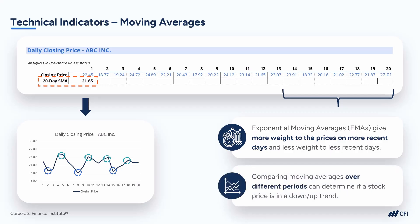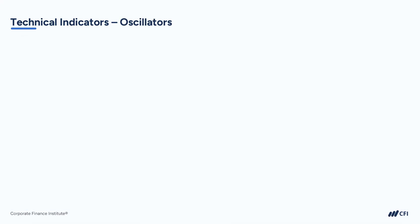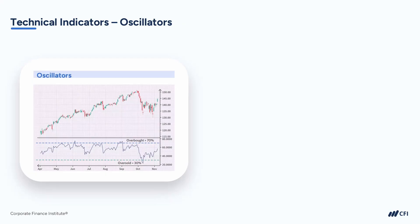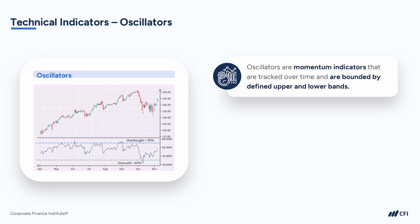Analysts will often compare moving averages over different periods with one another, such as looking at the 50-, 100-, and 200-day moving averages on a single chart to determine if the price of a stock is in an uptrend or a downtrend, which will help inform their decision-making. Another set of indicators that technical analysts use in their models are oscillators. Oscillators are momentum indicators tracked over time and bounded by a defined upper and lower band. When oscillators approach these bands, they signal that the stock may be overbought or oversold. These indicators are often used in conjunction with moving averages to signal trade ideas.